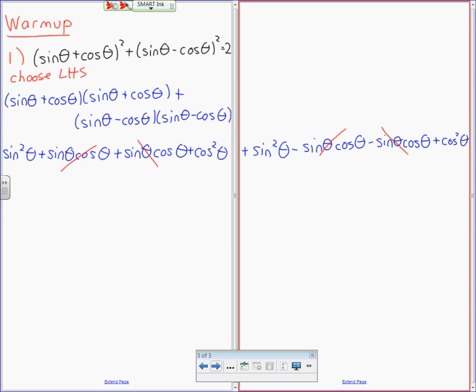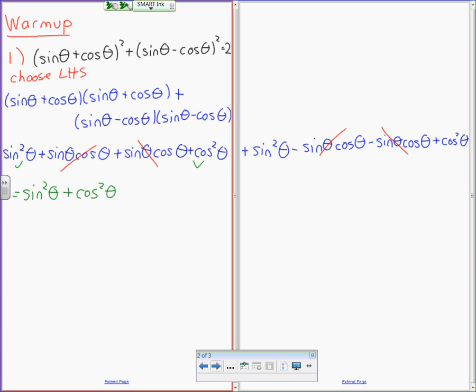Now, just writing down what's left, I have equals sine squared theta plus cos squared theta. That is gone, that is gone, and another sine squared theta and another cos squared theta.